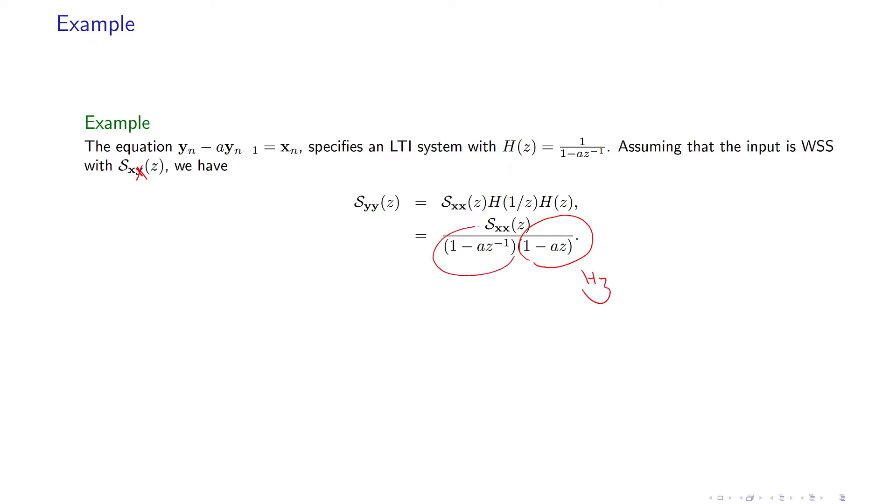And this is H conjugate of 1 over z conjugate. Because if I replace z by z conjugate, H of 1 over z conjugate is equal to 1 divided by 1 minus a, and then you have z minus 1, and I put 1 over z conjugate. Now, if I put another conjugate on top of this one...